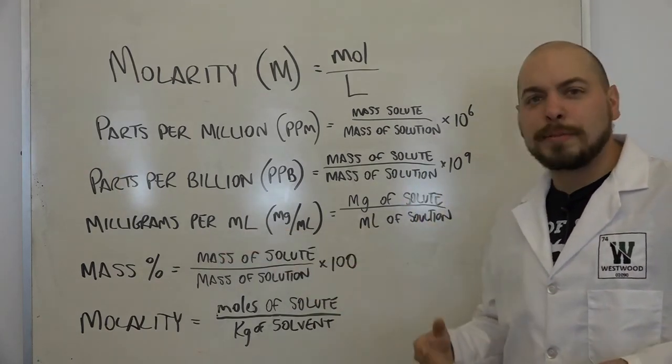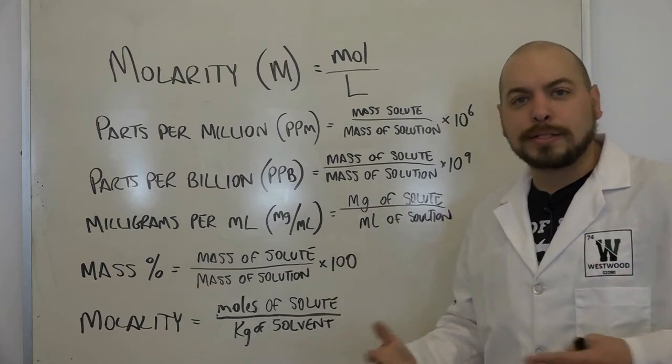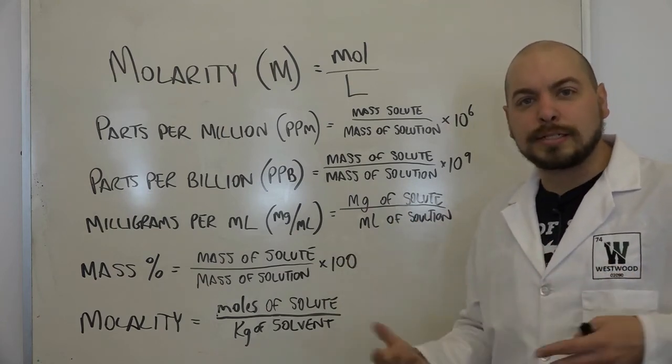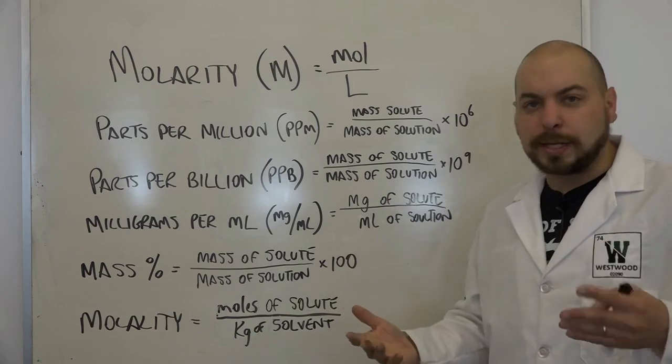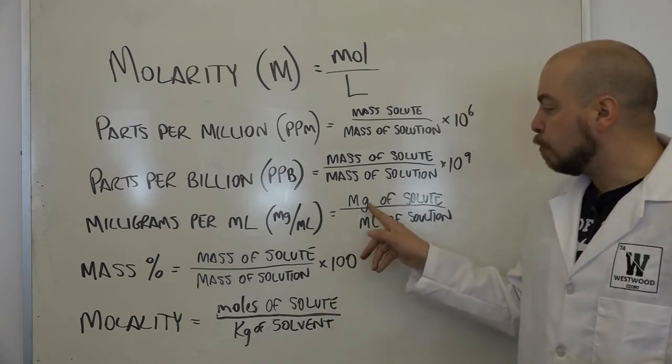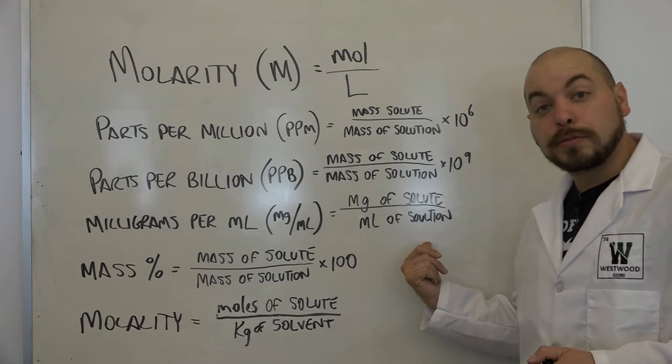Milligrams per million. This is oftentimes seen on, like, cosmetics and other things that you might see in daily existence, like medicines or, like I said, cosmetics or foodstuffs, where it's milligrams of solute over milliliters of solution.